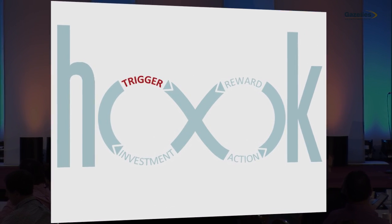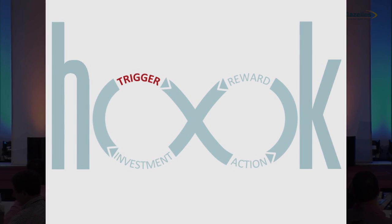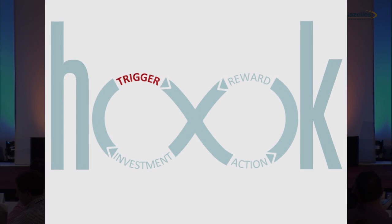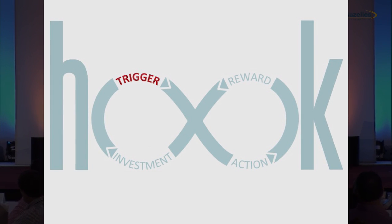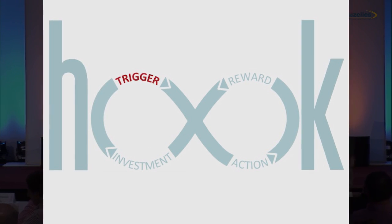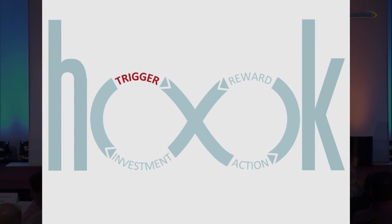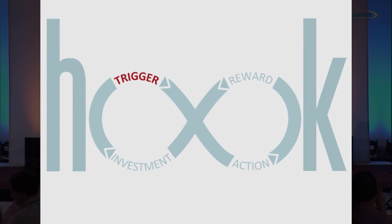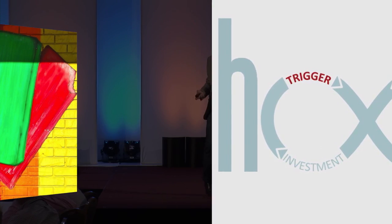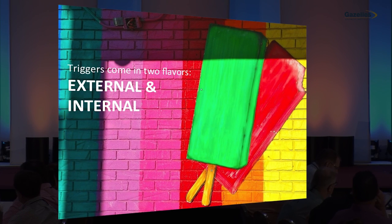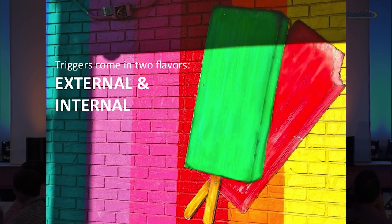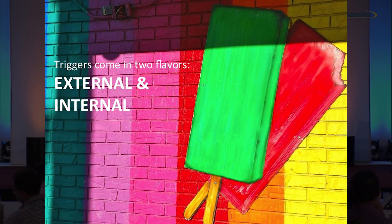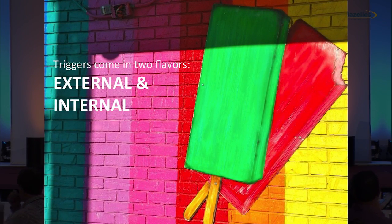Every hook starts with a trigger. A trigger is a call to action — it's a cue. It tells the user what to do next. And these triggers come in two types, two flavors, if you will.